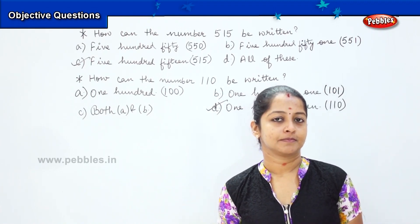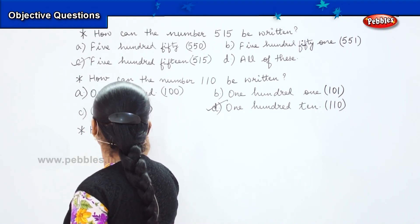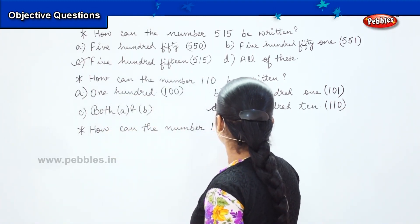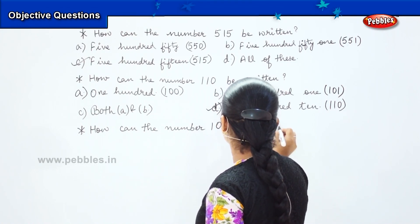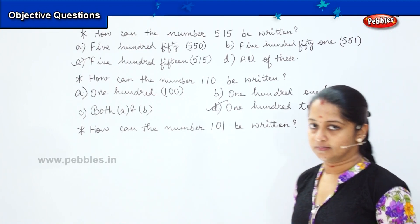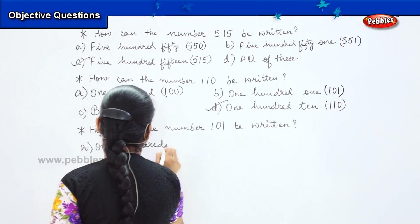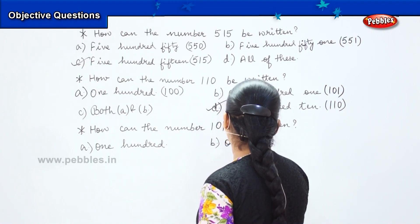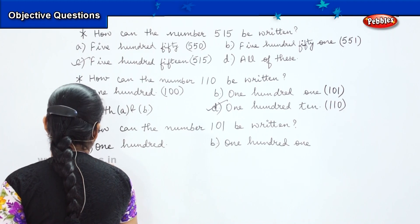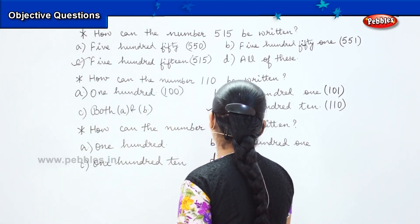Can we move to the next question? Okay, here we go. How can the number 101 be written? So the earlier question was asking how will you write 110, and this question is asking how will you write 101? And my options are: 100, my second option is 101, my third option is 110, and my last option is all of these.